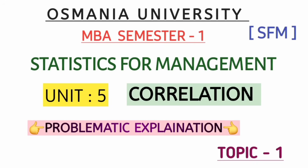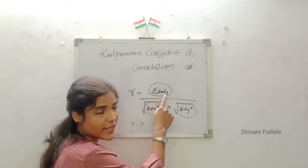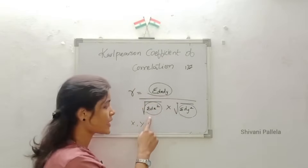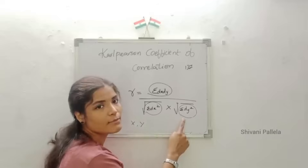Hello students, welcome back to our channel. In this video we will discuss the correlation topic of statistics for management, unit number 5. It is a compulsory problematic method in your examination. The concept I am explaining is from an older video for degree students, so the concept is the same. The formula is: sigma dx·dy divided by square root of sigma dx² into square root of sigma dy².